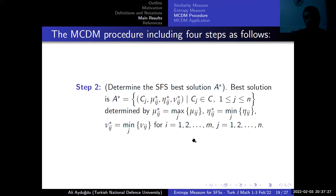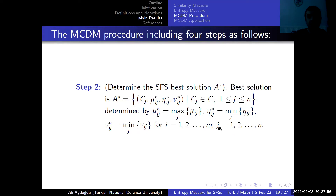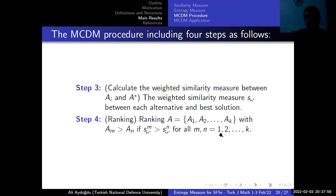In the second step, we obtain the best solution. The membership degree of the best solution is the maximum membership degree across all alternatives, the non-membership degree is minimized, and the hesitancy degree is also minimized. In the third step, we calculate the weighted similarity measure between each alternative and the best solution. In the fourth step, we rank all alternatives by means of their similarity degrees with respect to the best solution.